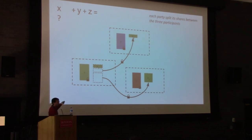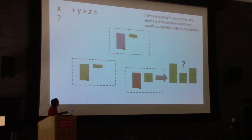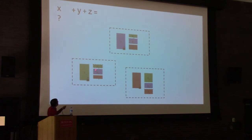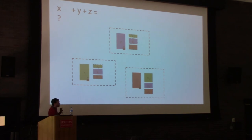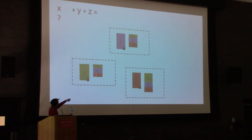From seeing just one of these pieces, you have no idea how big the actual x was — it could be bigger or smaller, and pieces can even be negative. Everybody does the same thing, so everybody receives one piece from each of the other participants. The sum of the three green pieces really was x, the sum of the blue pieces really was y, the sum of the red pieces really was z — which means the sum of all nine pieces really is still the answer we're looking for, even though no individual person has learned anything about anybody else's number. Each participant can locally take the sum of the three numbers they received, and the sum of those three local sums is the sum of x, y, and z.